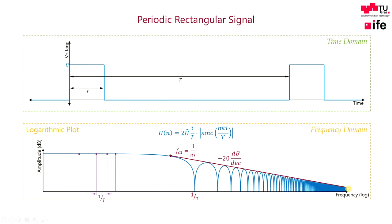If you measure a rectangular signal with a spectrum analyzer, you may see a second corner frequency. This corner frequency depends on the edges of our time domain signal. As in our example, both rise time and fall time are infinitely short, we do not see this second corner frequency in this plot. But as rise and fall times become longer, spectral components at higher frequencies will be suppressed with 40 decibels per decade.